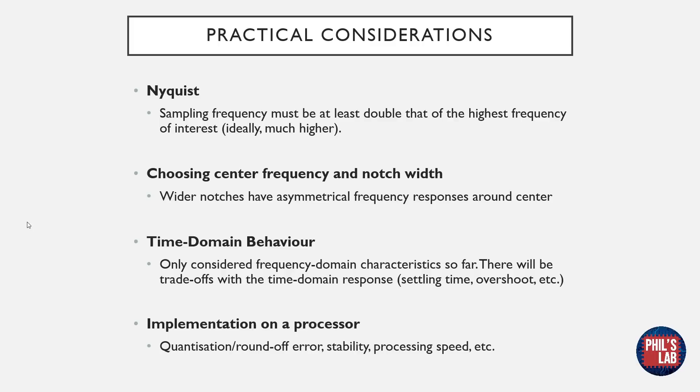Thirdly, we haven't really looked at the time domain behavior so far. We've only considered frequency domain characteristics, and there will be trade-offs with the time domain response, for instance the settling time, overshoot, and so forth. Lastly, there are various issues that arise when implementing dynamic systems on a processor with a limited number of bits to represent numbers. This could be quantization, round-off error, stability, and so forth. Additionally, there may be issues with processing speeds depending on the filter complexity.